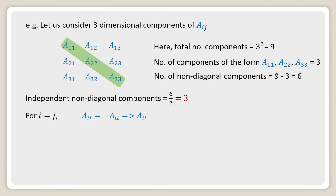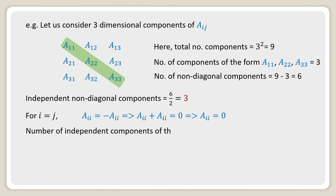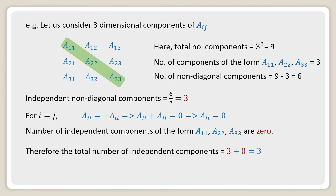For i equal to j, a_ii equals minus a_ii, which implies a_ii equals 0. So the number of independent diagonal components a11, a22, a33 is 0, since a_ii equals 0 when both suffixes are the same. Therefore, the total number of independent components equals 3 plus 0, that is 3, which can be written as half of 3 times (3 minus 1), where n equals 3 for the three-dimensional case.